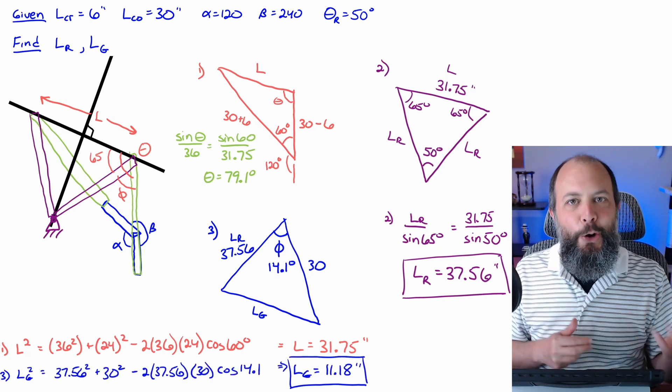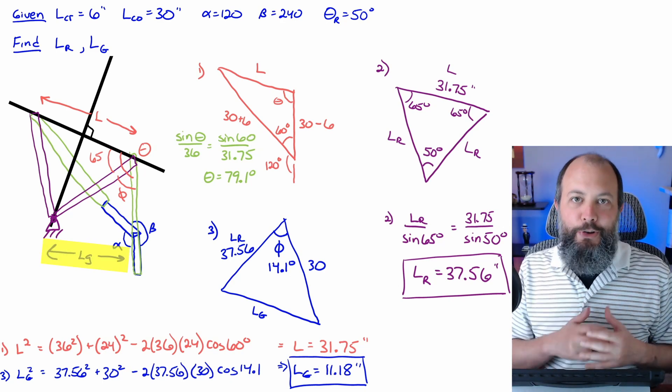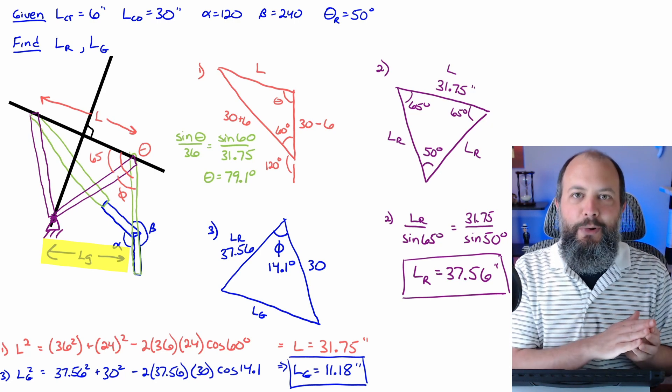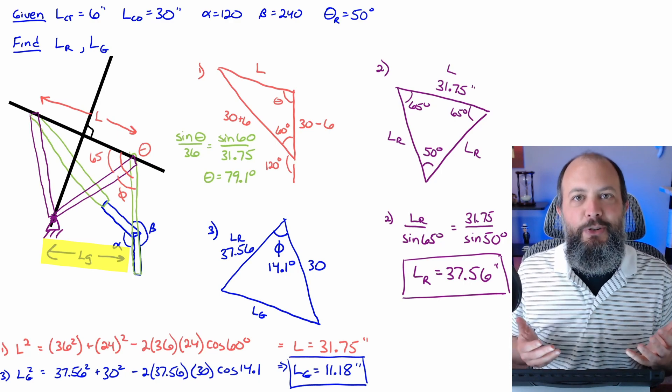So now with two sides and the angle between them, you can do a law of cosines and get 11.18 inches for your ground. So your final answer to this quick return crank rocker is lengths of six inches and 30 inches that you started with, and then your length of 37 and a half and 11.18 inches for the last two pieces.